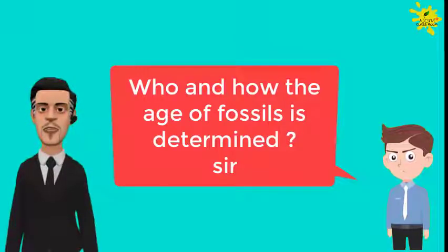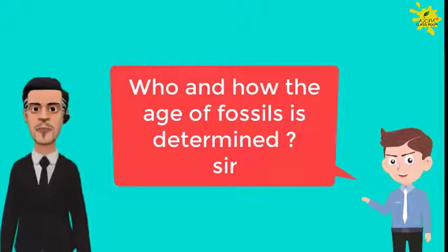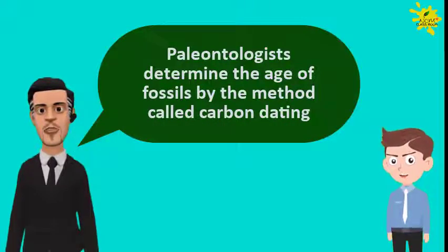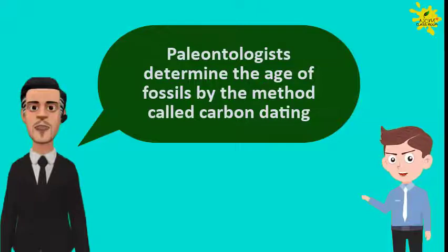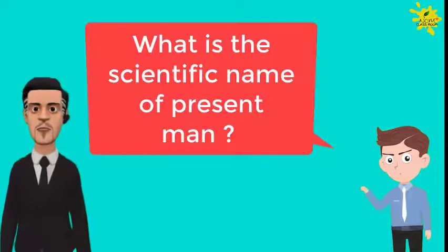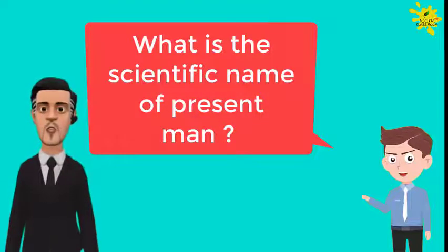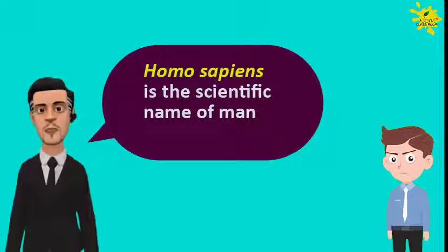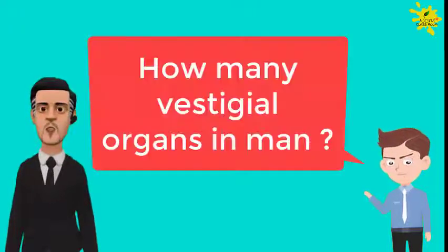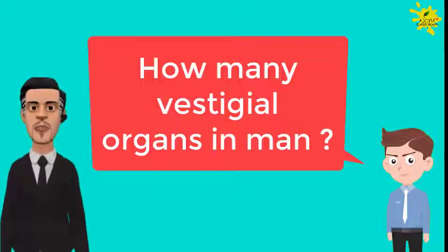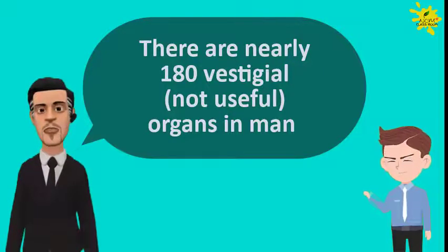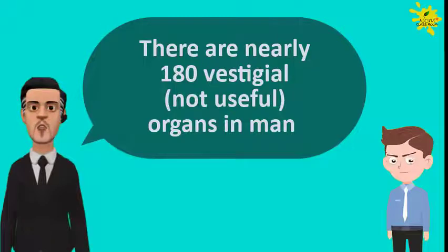Who and how is the age of fossils determined, sir? Paleontologists determine the age of fossils by the method called carbon dating. What is the scientific name of present man? Homo sapiens is the scientific name of present man. How many vestigial organs are in man? There are nearly 180 vestigial organs present in man, but they are not specifically useful.